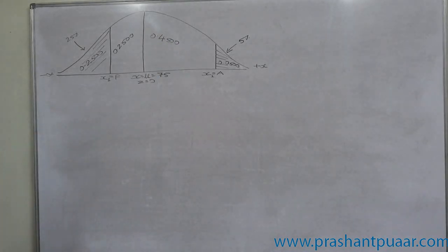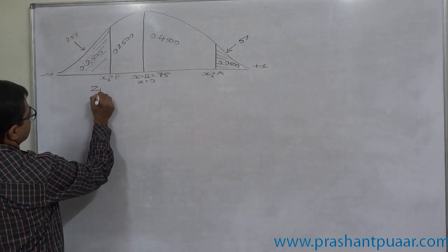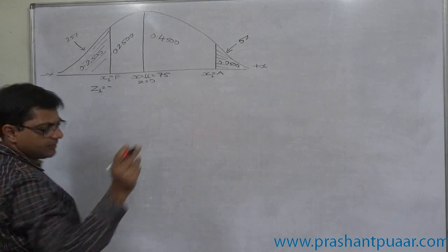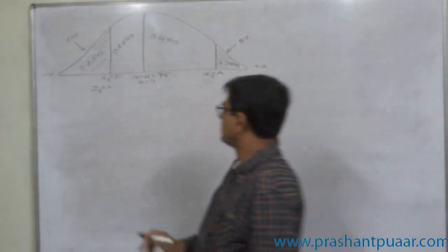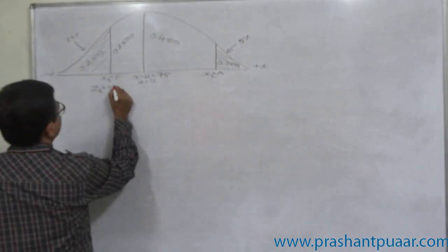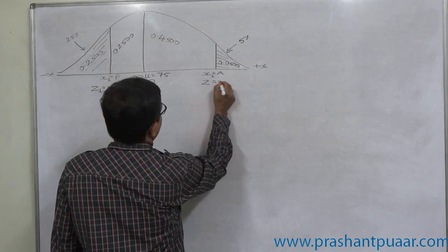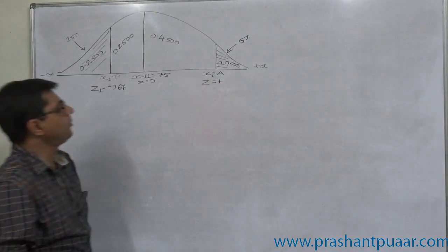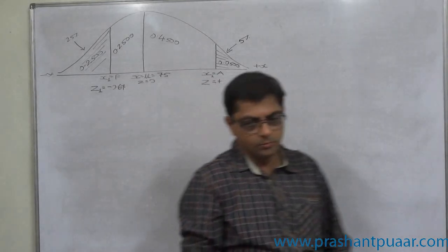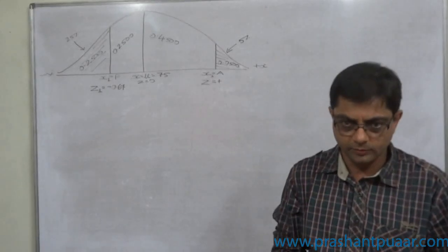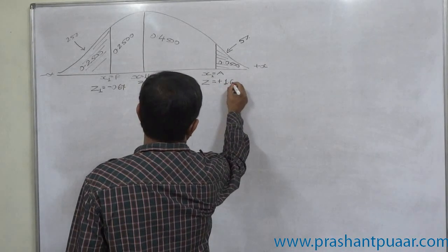We can find two respective values of z-score on the basis of these two areas. This will be negative, I think it will be approximately 0.67. And for 0.4500 area, nearest to 0.4500, 1.645.